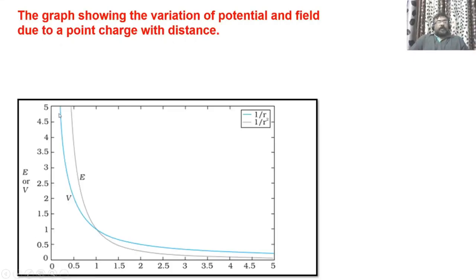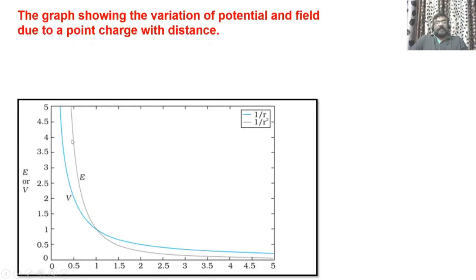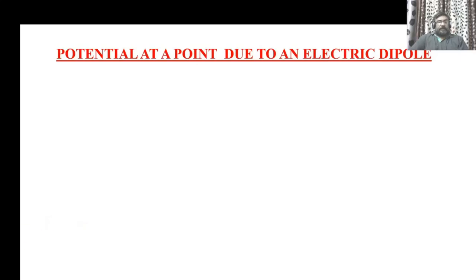Now let us look at the graph showing the variation of potential and electric field with distance from a point charge. The blue line shows the variation of potential and the dark blue line represents the variation of electric field with distance. Both vary in a similar manner, but remember that V is inversely proportional to R, whereas E is inversely proportional to R squared.